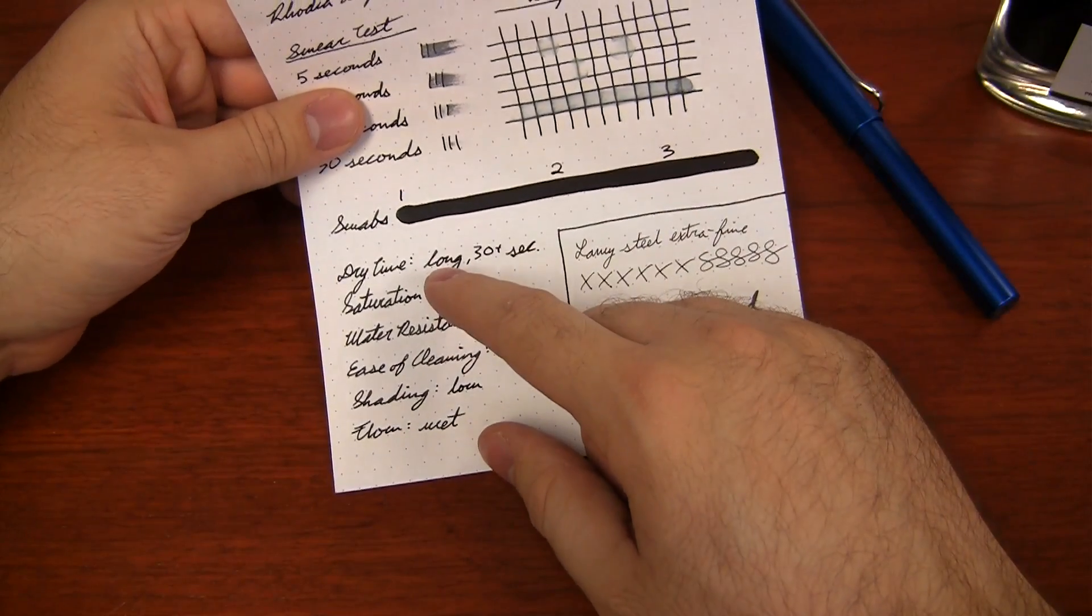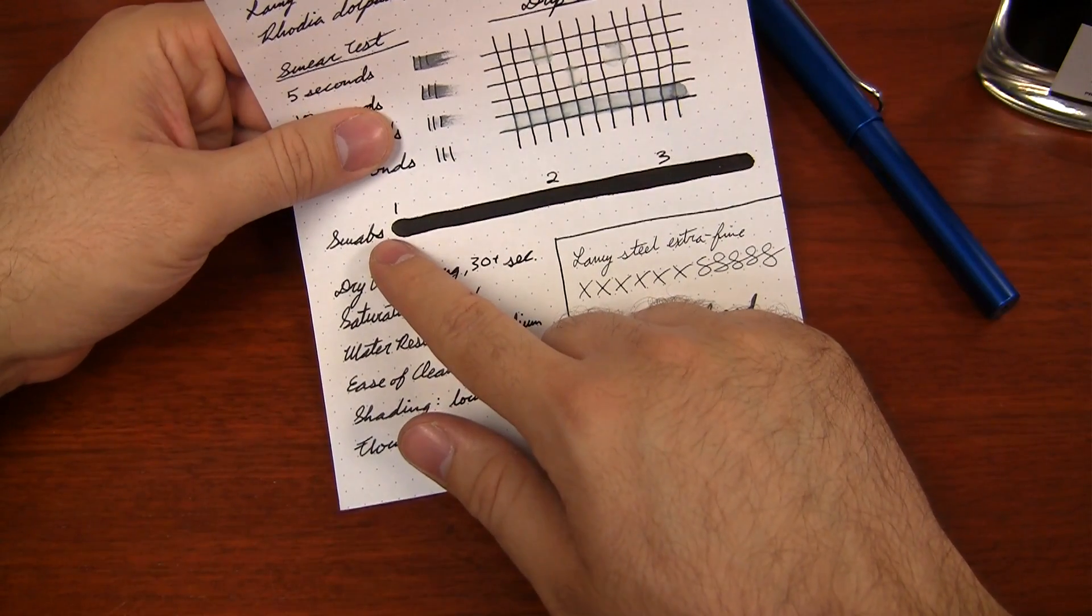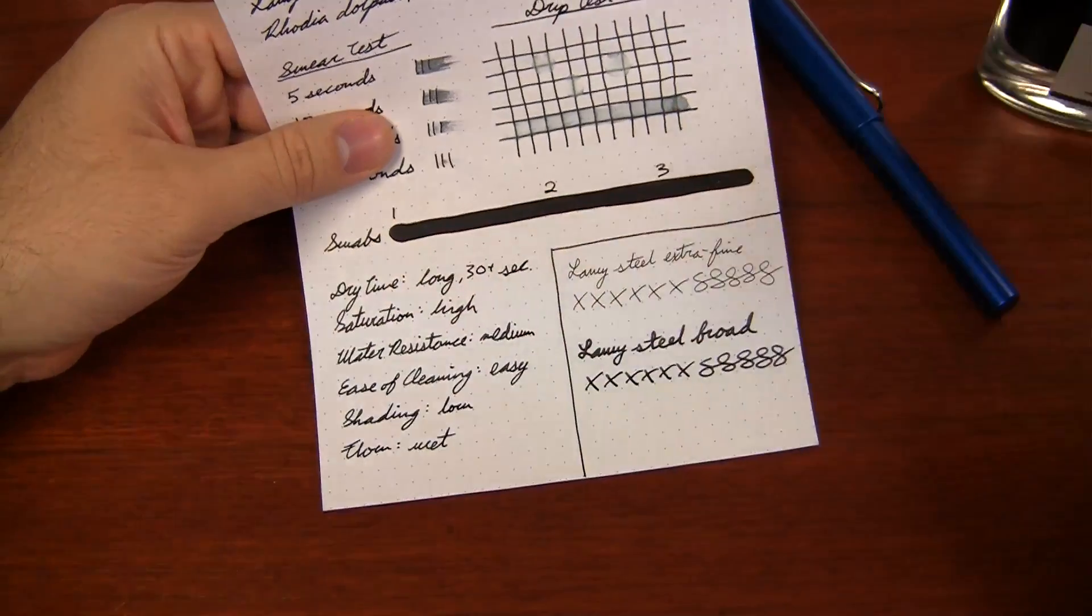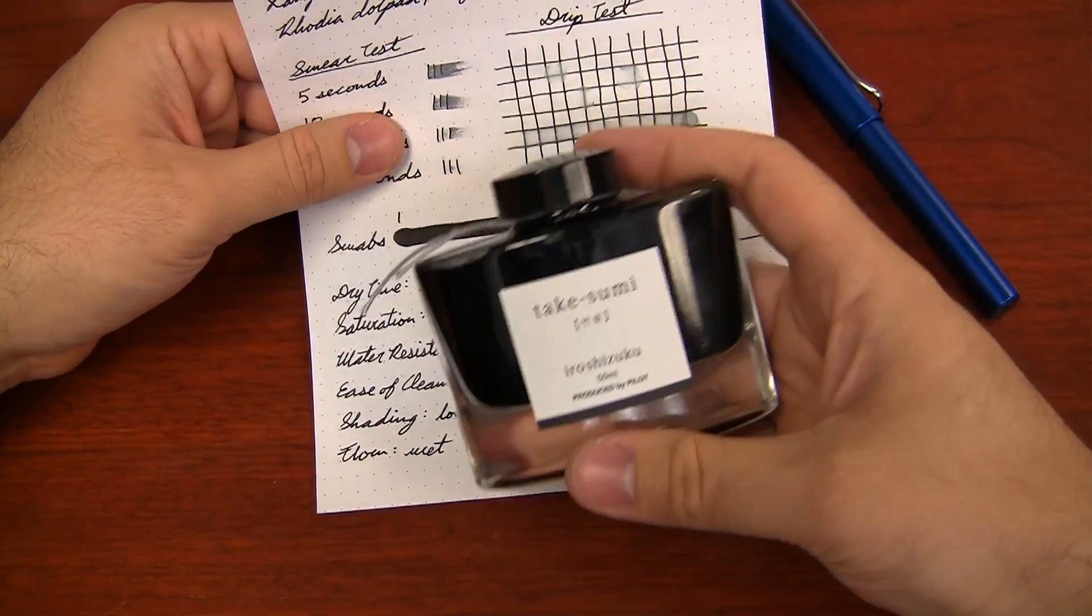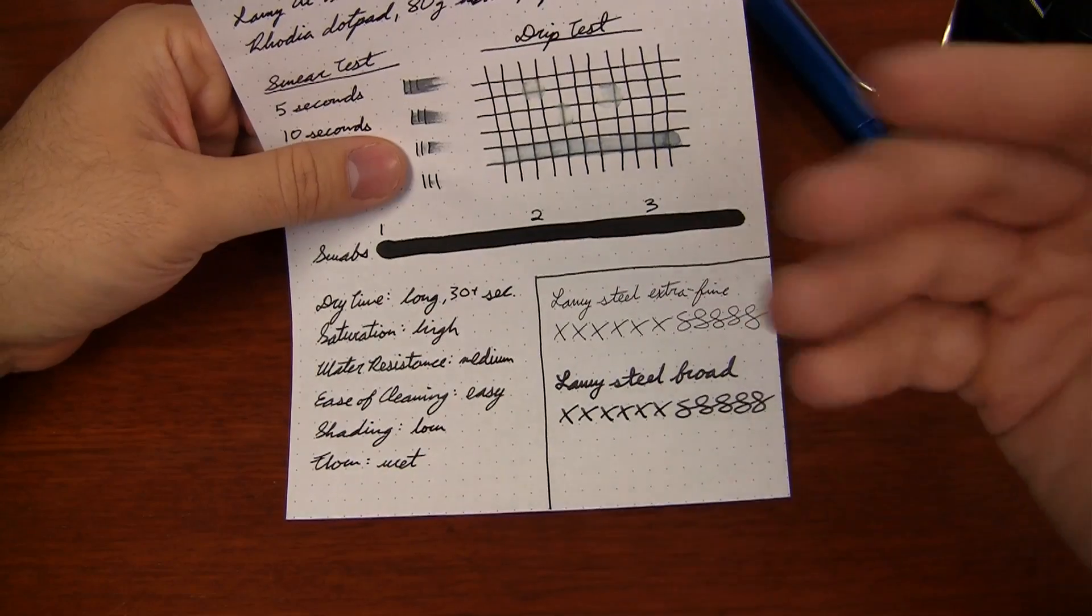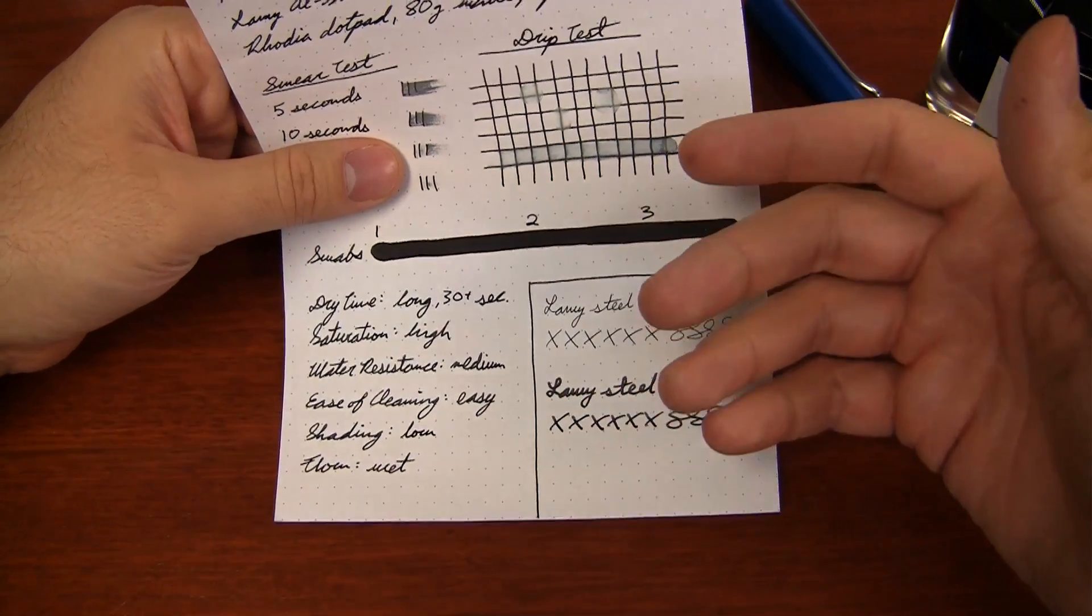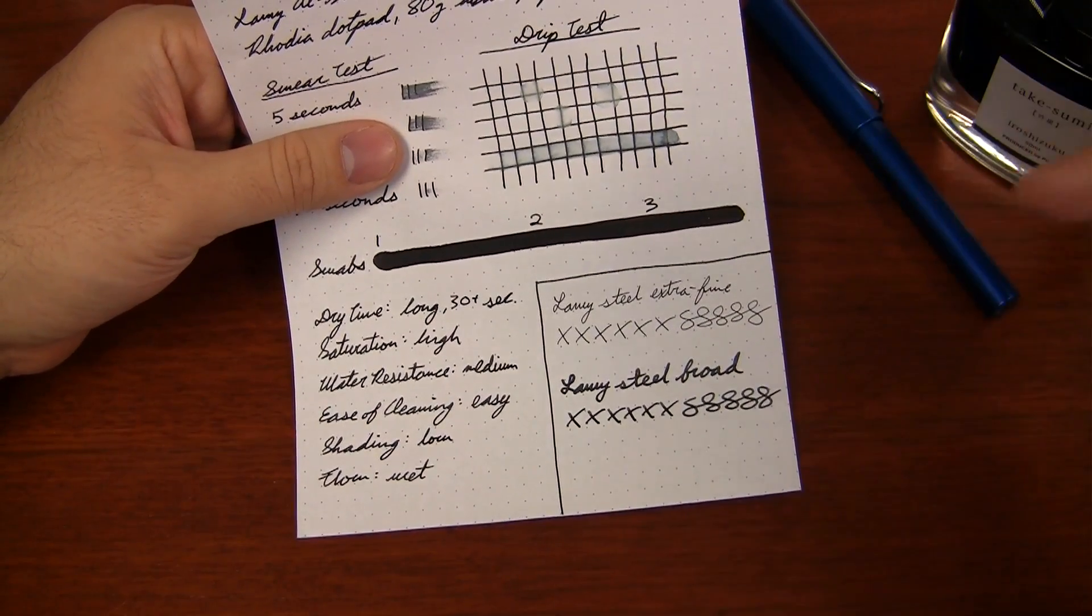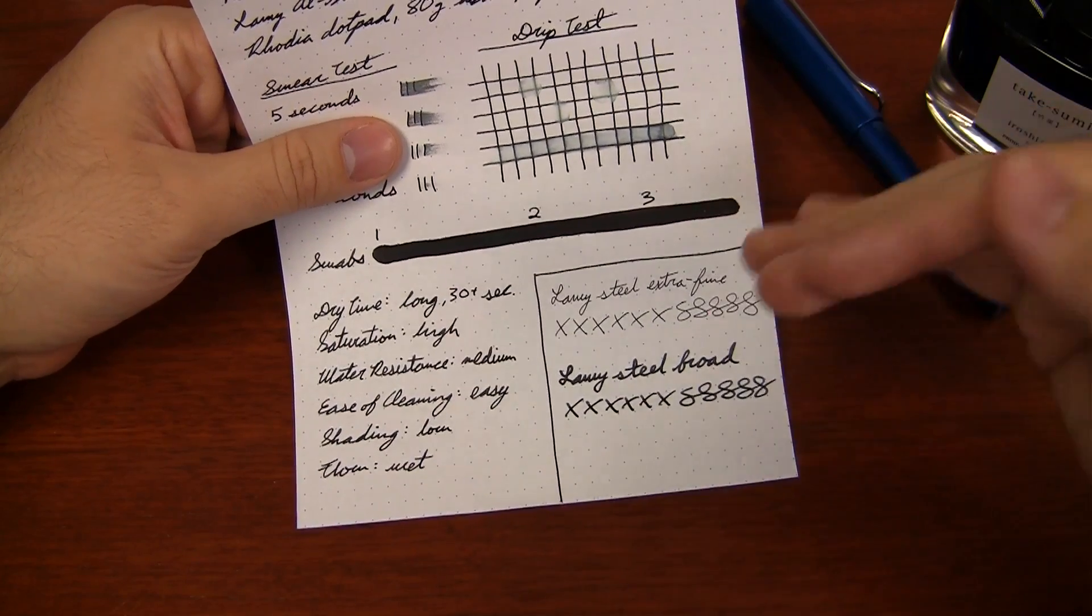It's a pretty saturated ink color, though. I mean, it's a fairly dark black ink. I was expecting, because the name means bamboo charcoal, the charcoal part worried me because I was concerned that it was going to be more of a gray than a black. But make no mistake, this is a black ink through and through.